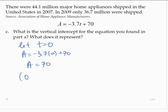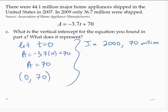So that's the ordered pair (0, 70). Remember that t is the number of years since 2000. So this is telling us in 2000, 70 million major home appliances were shipped in the United States.